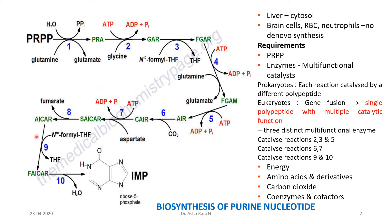This process requires six high-energy phosphates, making it a very energy-dependent process. Apart from this, the biosynthetic pathway also requires amino acids like glycine and aspartate, and derivatives like glutamine. Coenzymes required include N5,N10-methylene tetrahydrofolate (some books give this as N10-formyl tetrahydrofolate), N10-formyl tetrahydrofolate, and carbon dioxide.